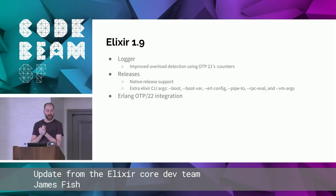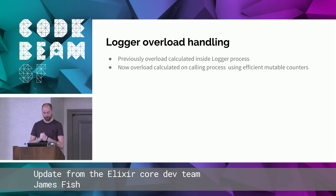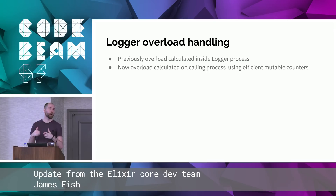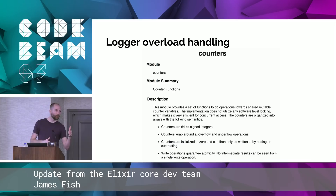Elixir 1.9, coming out in July hopefully. One improvement is more efficient overload handling in the logger, and built-in release support. Previously, overload handling was calculated inside the logger process, which could mean a really big message queue and potentially running out of memory. Now we've moved overload handling outside the process to the process making the logging call. This is much safer and faster if you're using OTP 21+. It uses the new efficient mutable counters module.